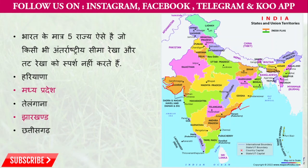Now let's talk about Tripura. Tripura is surrounded on three sides by Bangladesh. The remaining sides touch Mizoram and Manipur. So Tripura is bordered by Bangladesh on three sides.